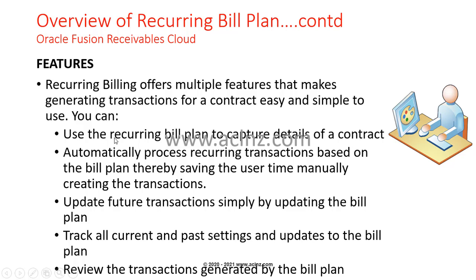Recurring billing offers multiple features that make generating transactions for a contract easy and simple. You can use the recurring bill plan to capture details of a contract, automatically process recurring transactions based on the bill plan, and update future transactions simply by updating the bill plan. You can also track all current and past settings and updates to the billing plan, and review the transactions generated by the bill plan — all from one workbench.